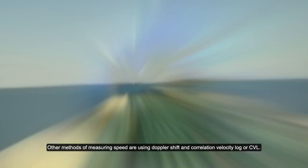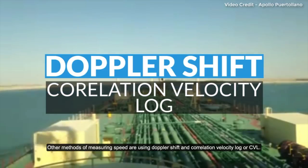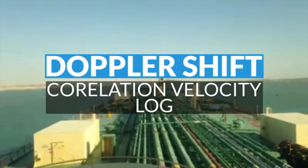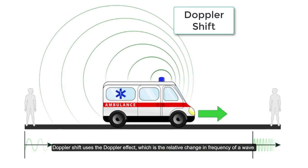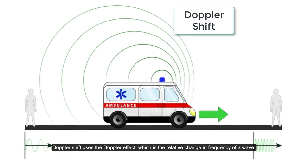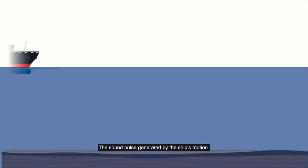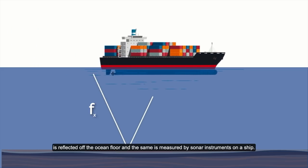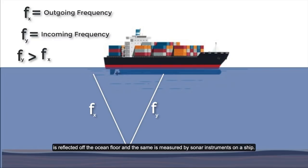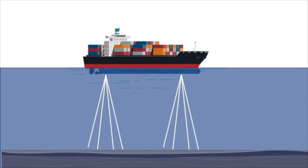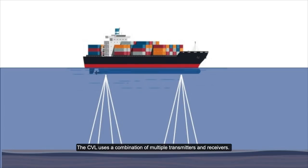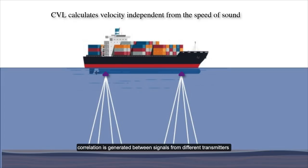Other methods of measuring speed include Doppler shift and correlation velocity log, or CVL. Doppler shift uses the Doppler effect, which is the relative change in frequency of a wave when the source and the observer are in relative motion. The sound pulse generated by the ship's motion is reflected off the ocean floor and measured by sonar instruments on the ship. The CVL uses a combination of multiple transmitters and receivers. Being one of the most expensive methods, correlation is generated between signals from different transmitters at different locations, and the speed of the ship is thus calculated.